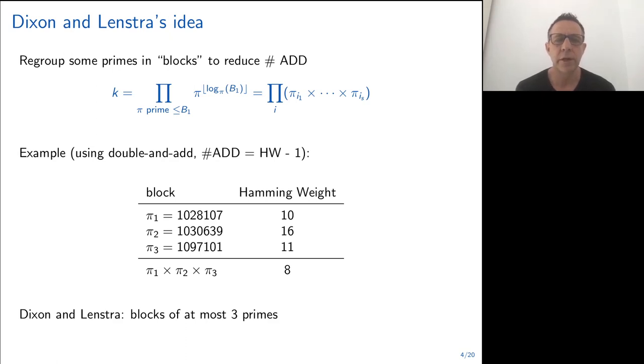Their idea was to regroup some of the primes into what we're going to call blocks for the rest of this talk in order to reduce the number of additions. For example, in the formula, you see that you can write k as a product of some of the products of well-chosen primes.